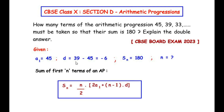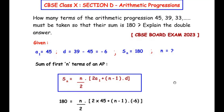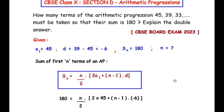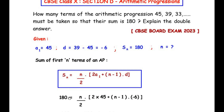The next step is substitution of the known values into this formula. In place of Sn we substitute 180, so: 180 = n/2 × [2 × 45 + (n−1) × (−6)]. Now let us take the 2 to the other side of the equals sign so that it multiplies with 180.